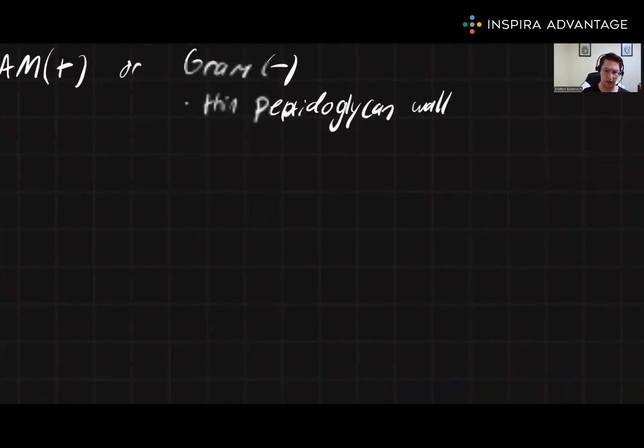Now, let me draw this out, because I think it can be kind of difficult to imagine this without seeing it. So let's say that we've got just a cell membrane right here. Well, for the gram negative, they're then going to have a thin layer of peptidoglycan that's kind of in the middle.